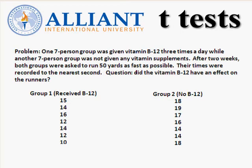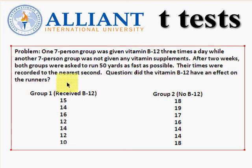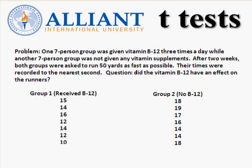Here's the actual problem. They took two separate groups. The first group received a bunch of vitamin B12 and then were asked to run the 50-yard dash — their times were recorded after receiving the treatment. They were compared to a group that did not get anything. That's the nature of this t-test.